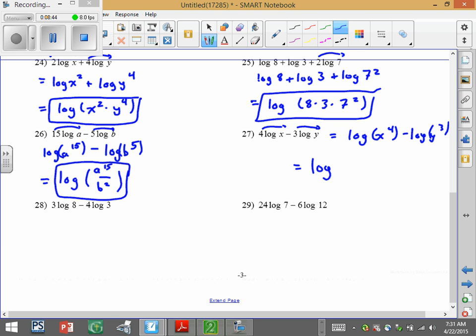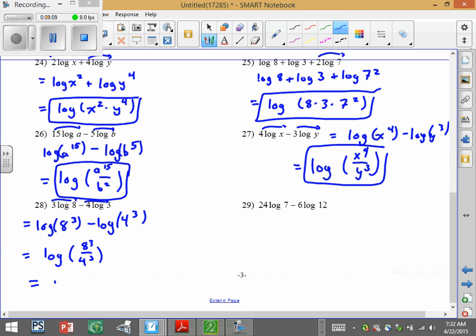And then here again subtraction between logs turns into division in a single log. Move them back up. So we have log 8 to the 3rd minus log 4 to the 3rd. Again there's subtraction. We turn that into division.